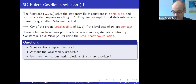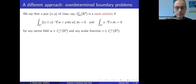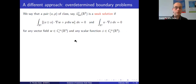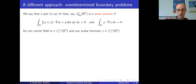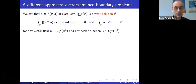What I want to tell you today is a different approach to Gabrilov's, based on overdetermined boundary problems. With this approach — spoiler — you get a much bigger family of compactly supported stationary solutions of the Euler equation, but you pay a price for this generality: the solutions are not smooth. You get only weak solutions, specifically piecewise smooth solutions.